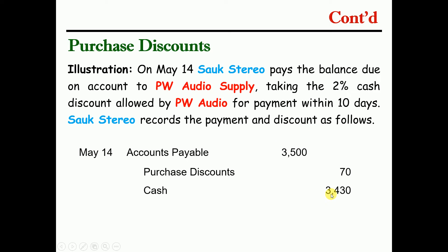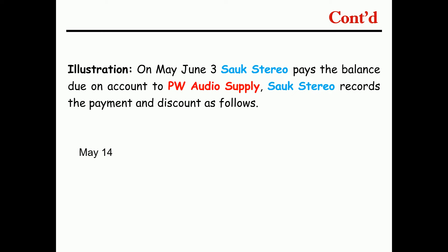We are checking into the account so that we record account payable properly. In the perpetual inventory system, account payable is debited and inventory is credited. If the discount period has passed, we are not able to get a discount. Account payable is debited and cash is credited.